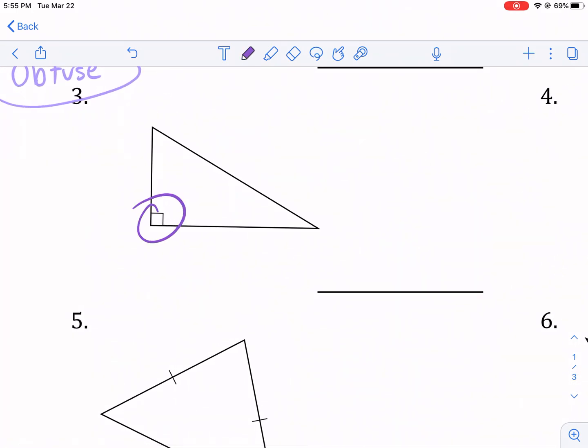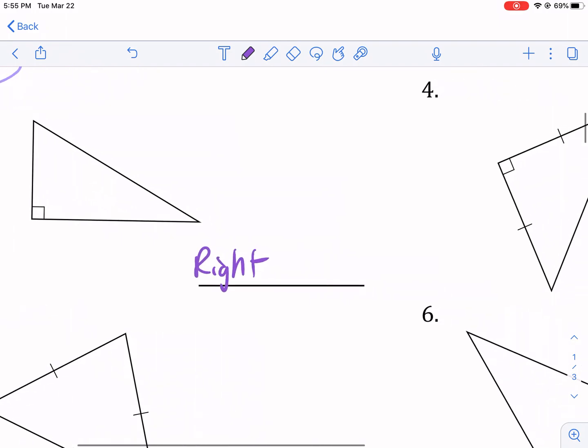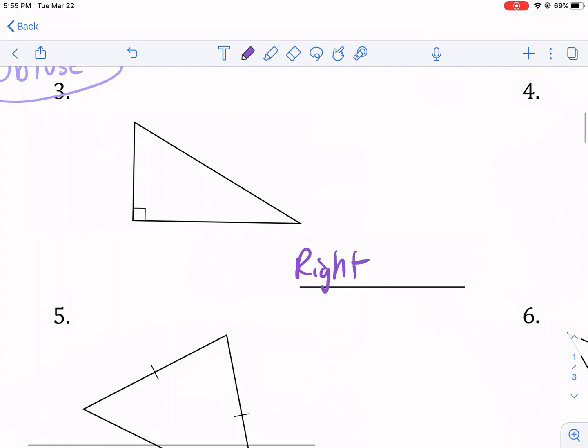Look at this one. We know this one. It's got a 90 degree. Anytime you see that measure, that little rectangle, that's a square right there. We know it's a right triangle. So it's a right. That's our angle metric, our angle naming system. And then we don't know anything about the sides. So it's scalene. So this is a right scalene triangle.